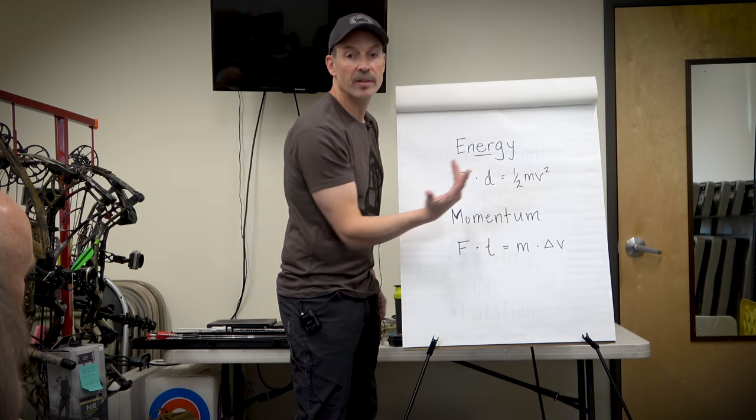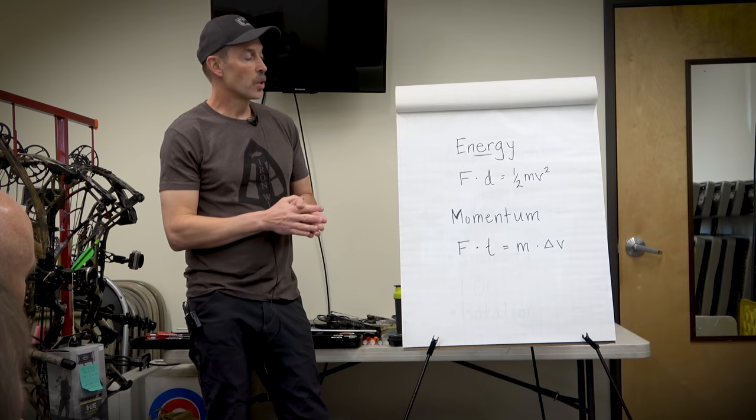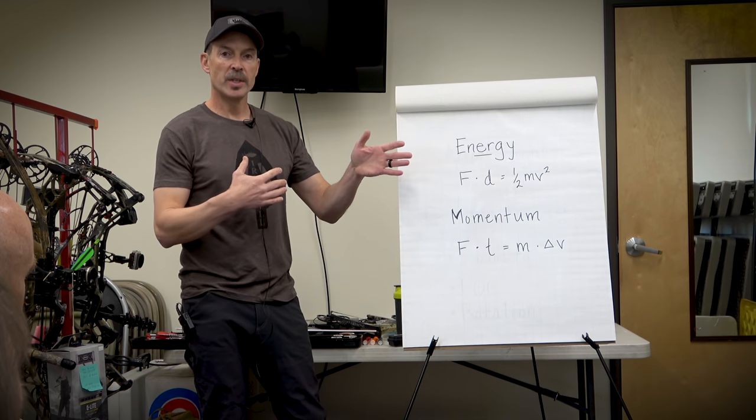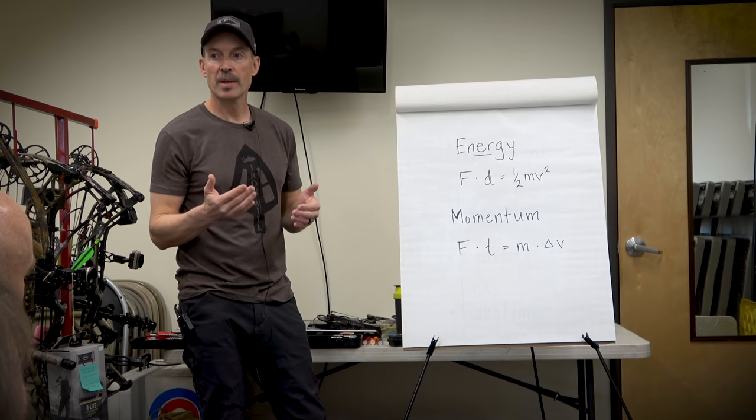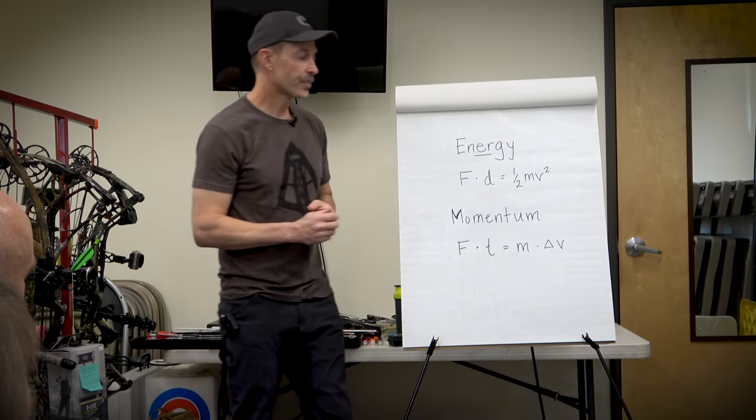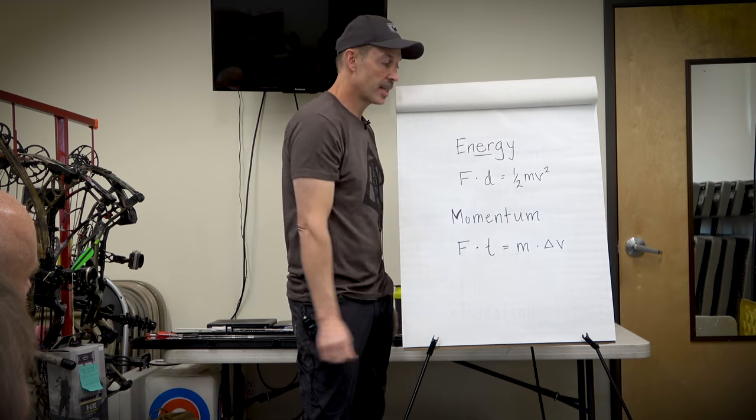The bow is kind of a constant energy machine. It's a little more efficient with a higher mass arrow, so you get a few percent more, but basically that's going to be pretty constant.